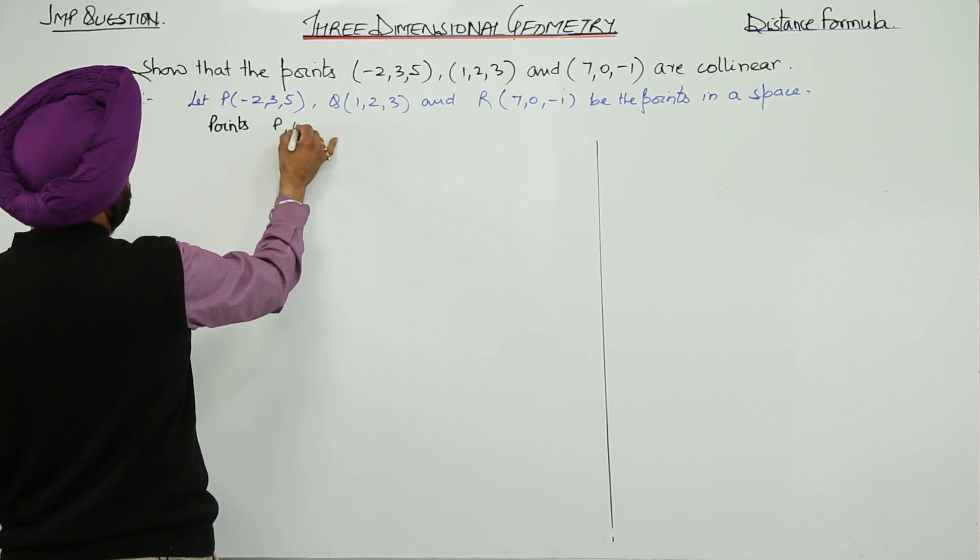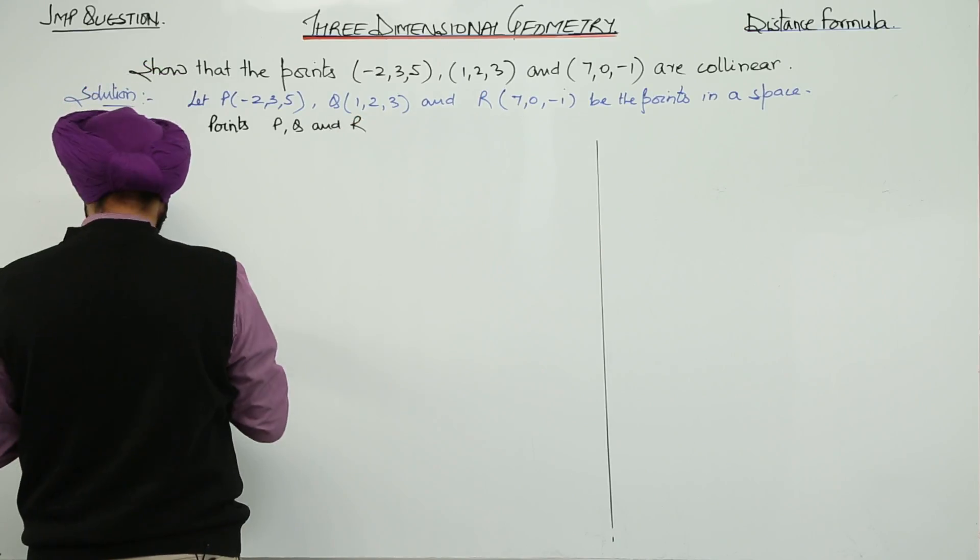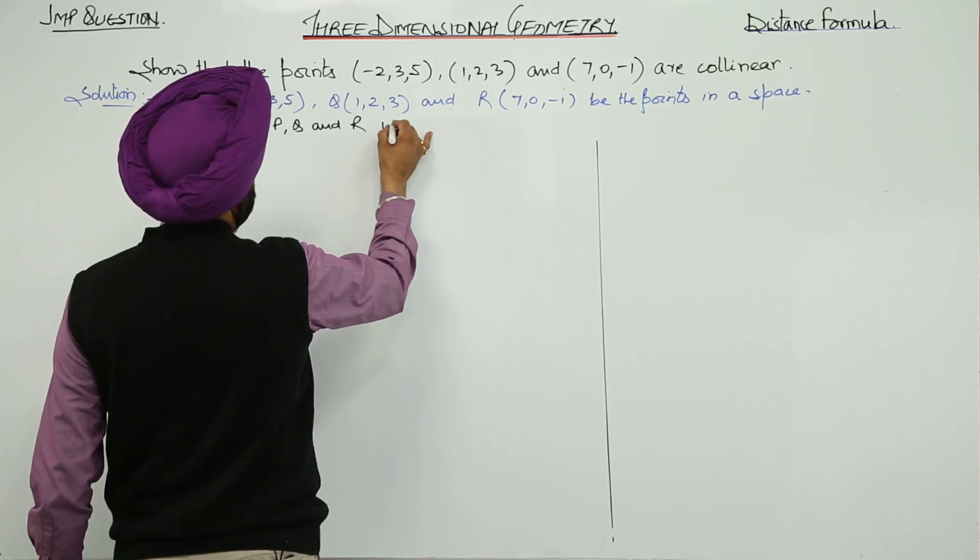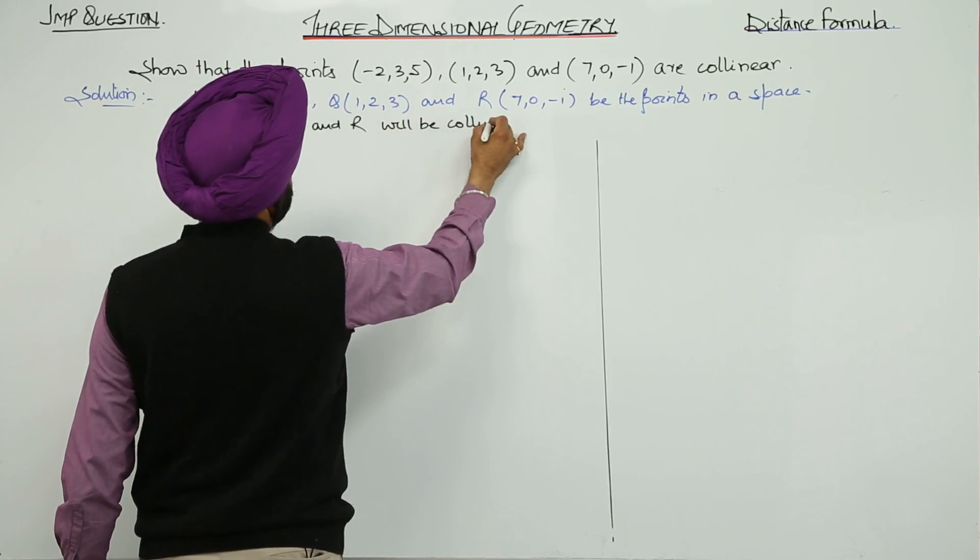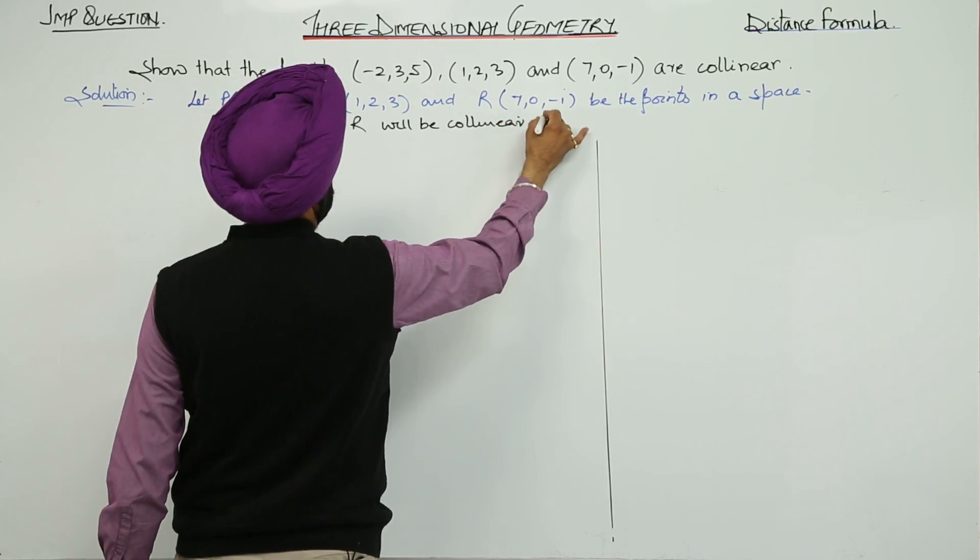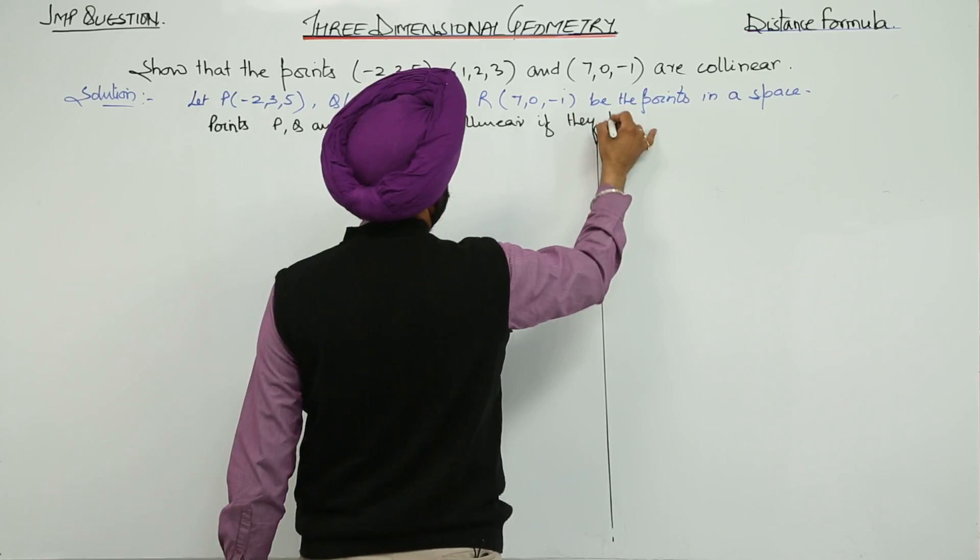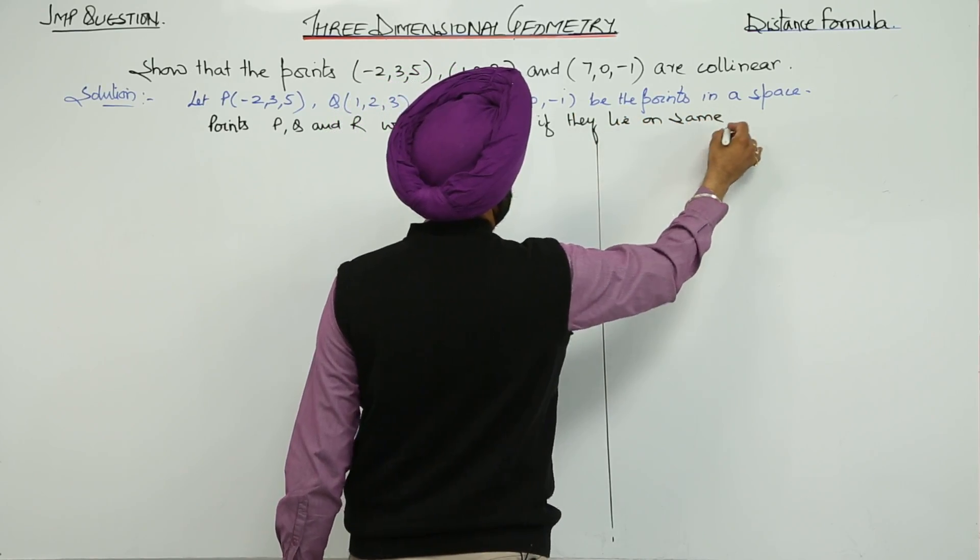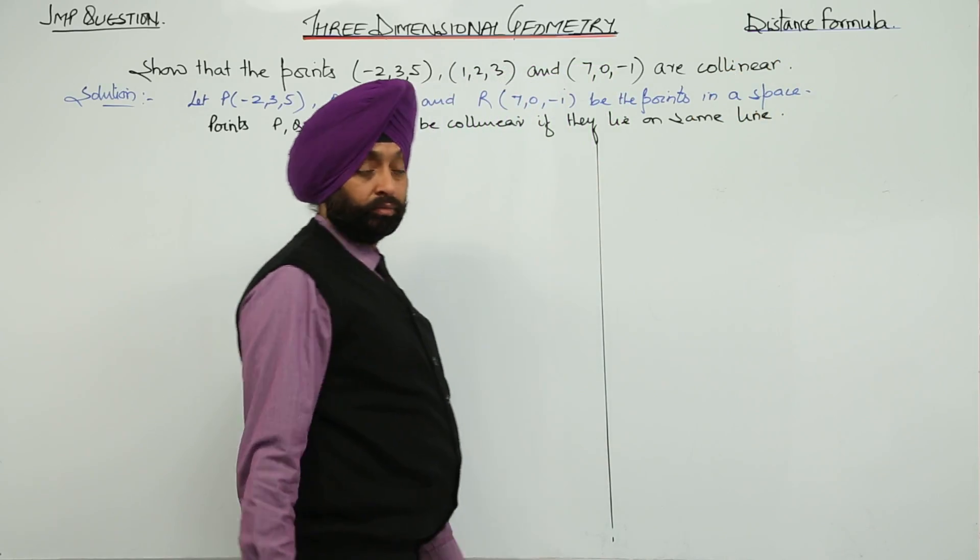Points P, Q, and R will be collinear if they lie on the same line.